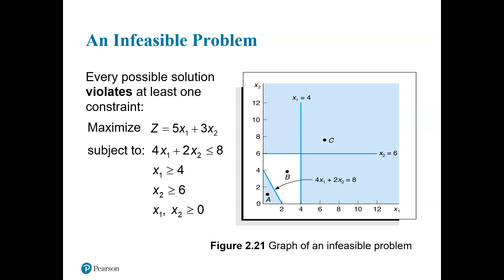This is the infeasible problem where every possible solution violates at least one constraint. It's a maximization problem, so we want to get as far away from the origin from point zero zero as possible. We're trying to maximize our profits. It's subject to our first constraint 4x1 plus 2x2, which is less than equal to 8, which is down here. This is basically saying we cannot go past this boundary line. Anything in here is feasible. Point B would not be feasible.